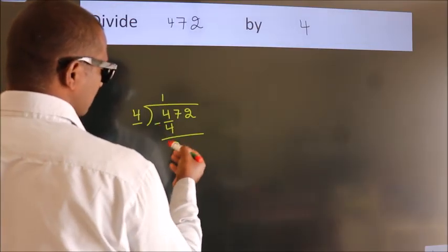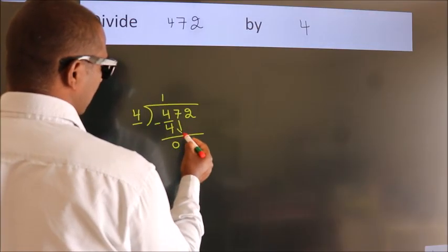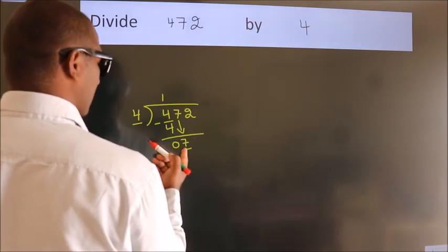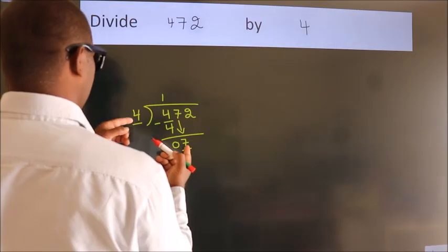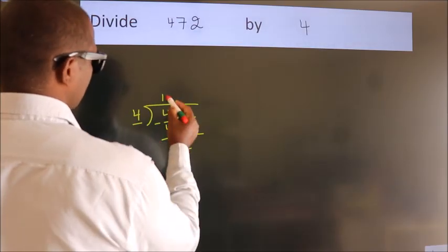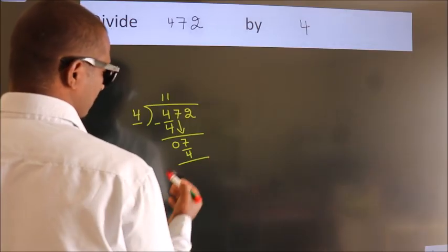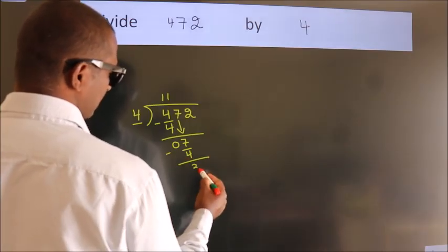After this, bring down the beside number. So 7 down. So 7. A number close to 7. In 4 table is 4 once, 4. Now we subtract. We get 3.